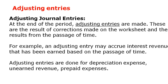After the trial balance, we make adjusting entries. At the end of the period, adjusting entries are made — these are the result of corrections made on the worksheet and result from the passage of time. For example, an adjusting entry may occur for interest revenue earned based on the passage of time. Adjusting entries are done for depreciation expense, unearned revenues, and prepaid expenses. When you prepare the trial balance and worksheet and discover accounting errors, you also make adjusting entries to correct those errors.